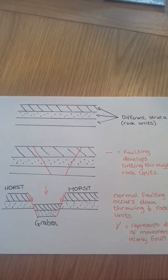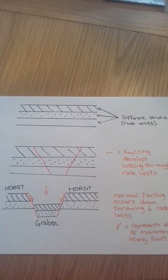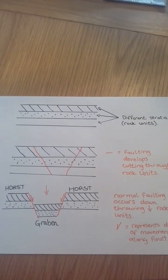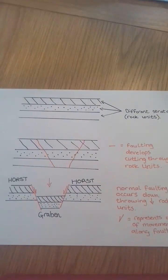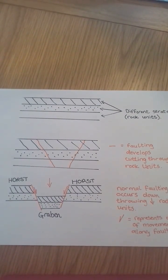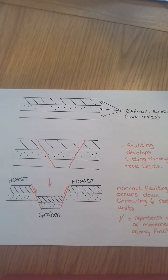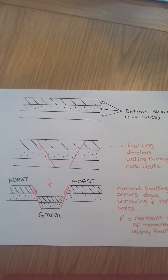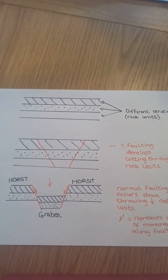Horsts and grabens are more often than not formed together. Grabens are typically represented by low-lying areas such as rifts and river valleys, whereas horsts represent the ridges between or on either side of these valleys.